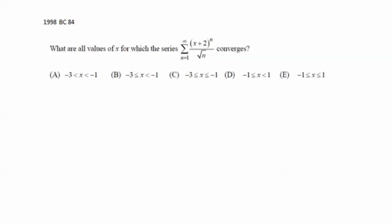1998 BC 84. What are all values of x for which the series, summation from 1 to infinity of (x+2)^n over the square root of n, converges?